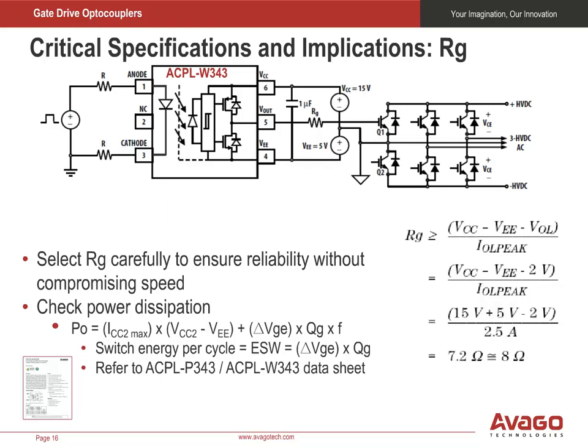The gate resistor selection is very important. If it is too big, the speed will suffer. But if it is too small, the peak current handling capability of the device will be exceeded. Don't forget to check the actual power dissipation of your device with your specific supply current, supply voltage, gate drive, gate charge, and switching frequency working conditions. The actual power dissipation must not be higher than the maximum power handling capability of the selected gate driver package.